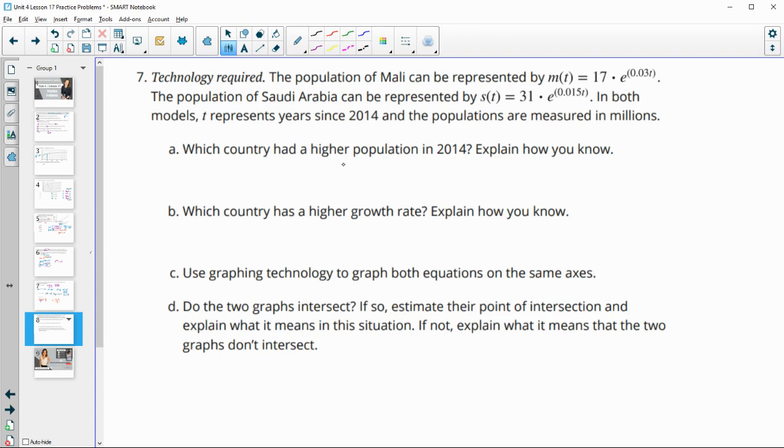So which country had a higher population in 2014? Which is your initial time, right? So your initial time is going to be this or your initial value. So Saudi Arabia had a higher population to start with at 31 million versus 17 million.